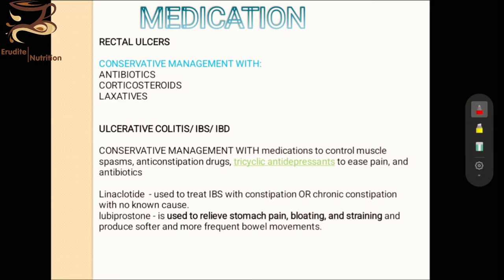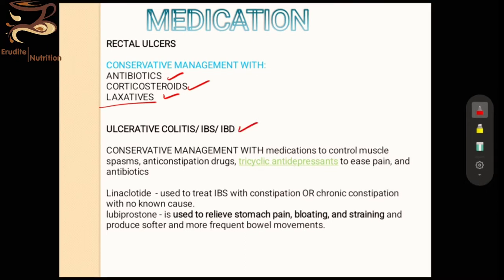In the case of rectal ulcers, antibiotics are used because there is septicemia — infection in the blood — and laxatives because chronic constipation is a major cause. Corticosteroids are sometimes used to heal wounds faster and downregulate inflammation. When we talk about IBS or ulcerative colitis, we usually give medications that control muscle spasms to help with cramping, and anti-constipation drugs if the person is feeling constipated.